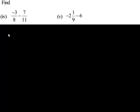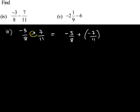Let us move to the next question. We have negative 3 upon 8 minus 7 upon 11. This can also be written as negative 3 upon 8 plus negative 7 upon 11. Here we are just taking this negative sign inside the parenthesis so that this particular problem can be converted into the addition problem.